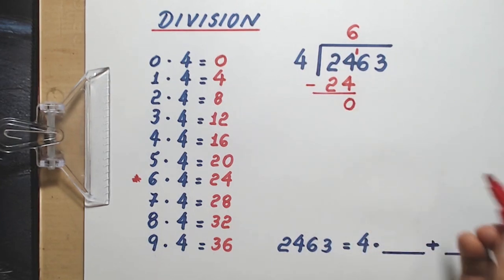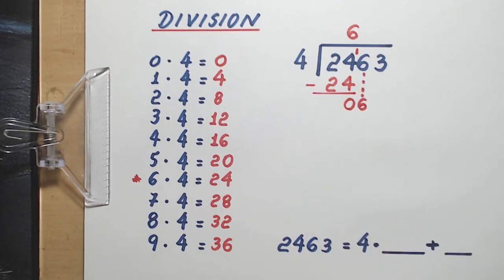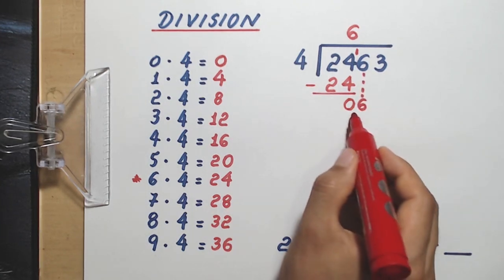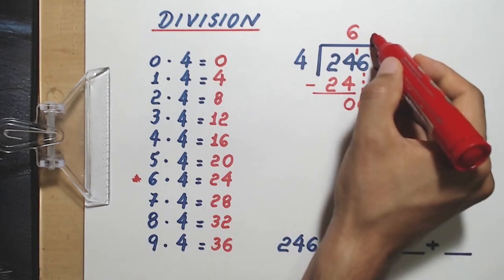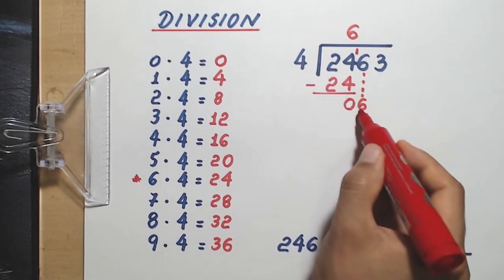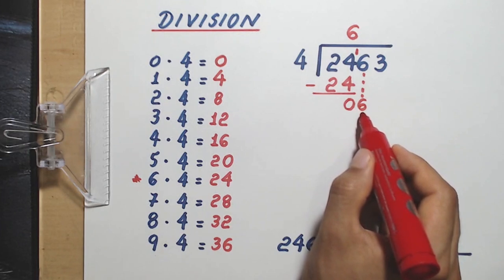After a subtraction, we bring down the next digit, which is this 6 right here. Now we have 06, forget about the 0 on the left, think only of this 6. What number do I multiply by 4 to get almost 6, or 6, but not more than 6?